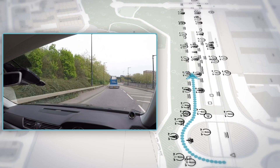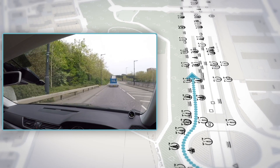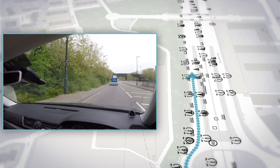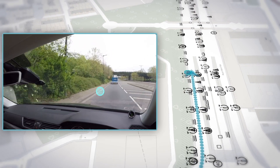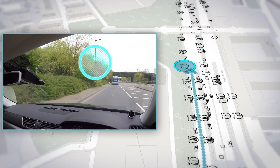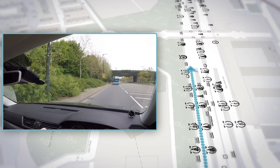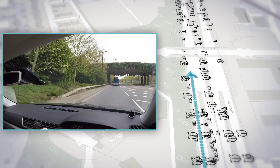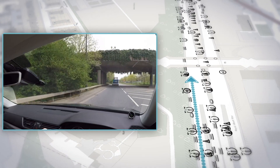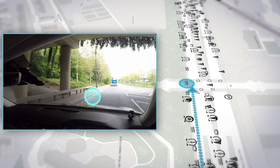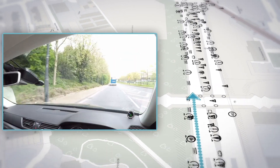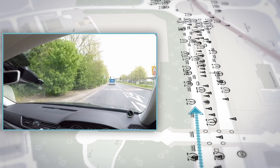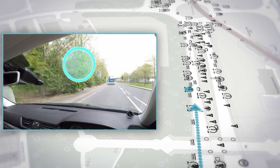Through capturing more data from multiple passes, it's possible for us to produce an overall aggregated version of the data. And it really doesn't take that long to get 100 journeys — a fleet of vans would do this in no time at all.